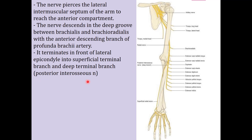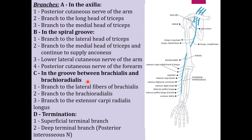In the axilla, the radial nerve gives three branches: the posterior cutaneous nerve of the arm (sensory, supplying skin of the posterior compartment of arm), a branch to the long head of triceps, and a branch to the medial head of triceps. Unlike the median and ulnar nerves, the radial nerve gives branches in the axilla.